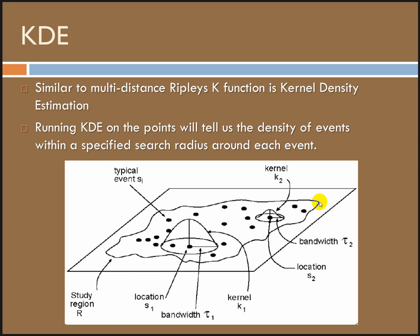Kernel density estimates. We did this in the last lab, and I just want to talk about it a little bit because it is very similar to that Ripley's K function. You've run it before, and you're going to run it in this lab again on our new data set. It tells you the density of the events within a specified search radius around each event. That search radius is the bandwidth.